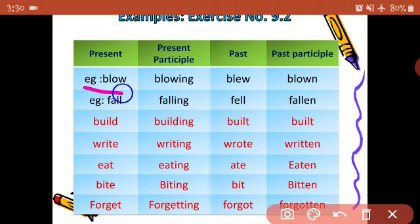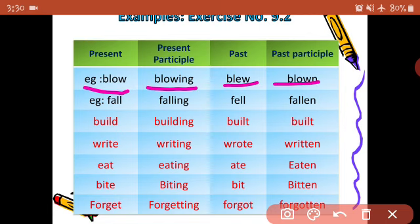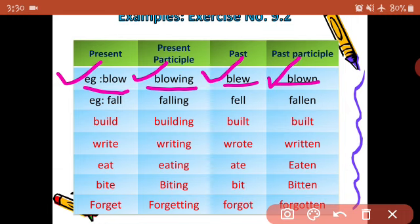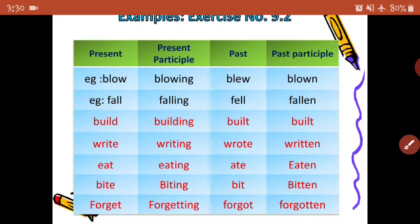Now, blow — blowing — blew and blown. Blow means the action is done; blowing means the action is going on; blew means the action has completed; and blown means the action was completed long ago. These forms of verbs are dependent upon time.